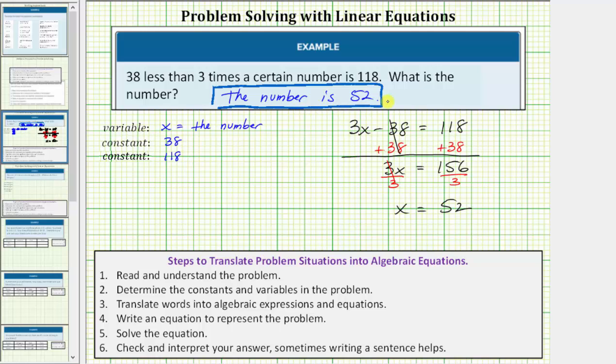Let's also verify that it does satisfy the equation 3x minus 38 equals 118. So we'll substitute 52 for x, which would give us three times 52 minus 38 equals 118. Again, thirty-eight less than three times 52 must equal 118.